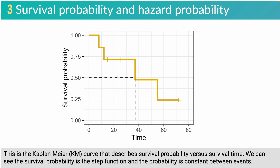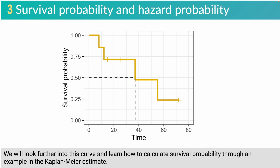This is the Kaplan-Meier curve that describes survival probability versus survival time. We can see that survival probability is a step function and the probability is constant between events. We will look further into this curve and learn how to calculate survival probability through an example in the Kaplan-Meier estimate.